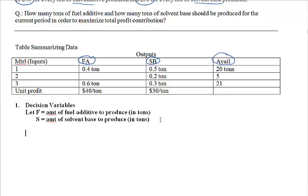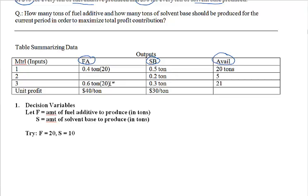Let's say we make 20 tons of fuel additive and 10 tons of solvent base, and see what kind of numbers we get. Try F equal to 20 and S equal to 10. Can we make these quantities with the available materials? We know that to make 1 ton of fuel additive, we need 0.4 ton of material 1 and 0.6 ton of material 3. So to make 20 tons of fuel additive, we need 0.4 times 20 tons of material 1 and 0.6 times 20 tons of material 3.